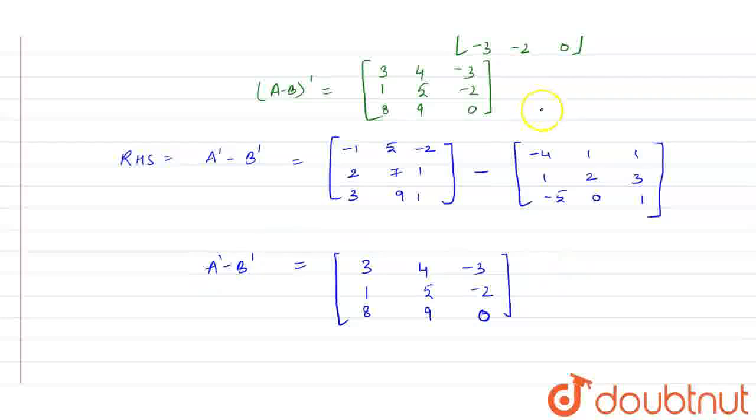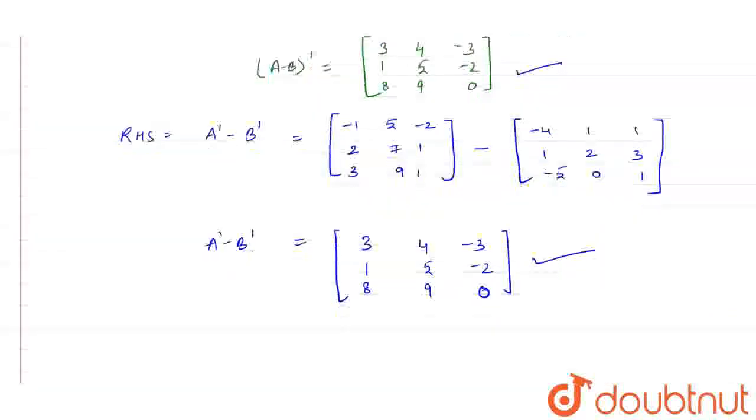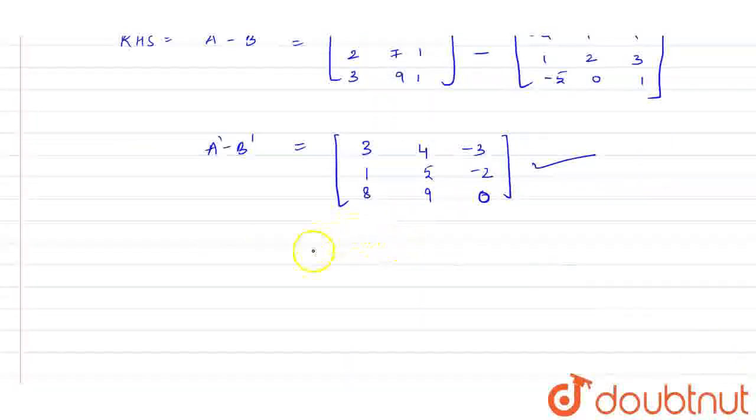Now let us compare these values. 3, 4, minus 3, 1, 5, minus 2, 8, 9, 0. These are same. So this equals to this. That means we have verified the solution. LHS equals RHS. We can see that it is verified.